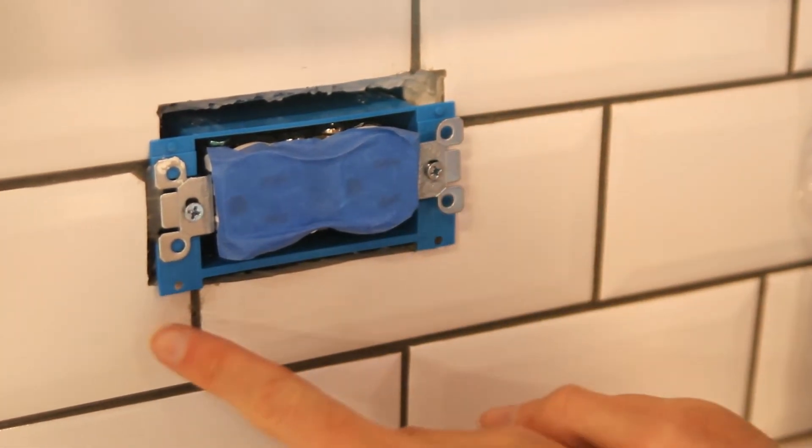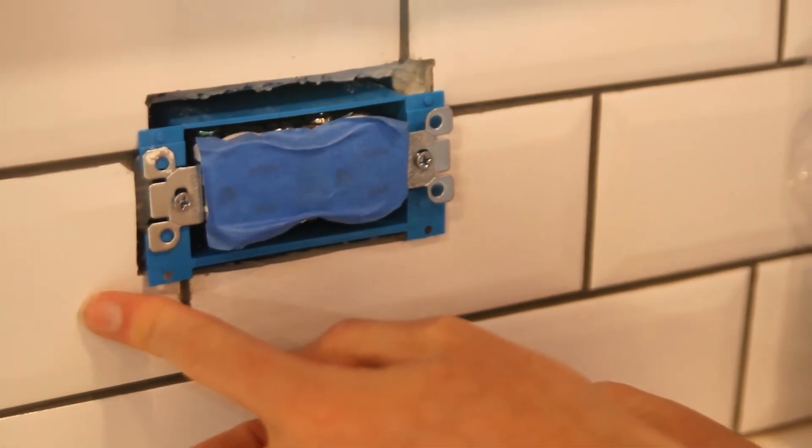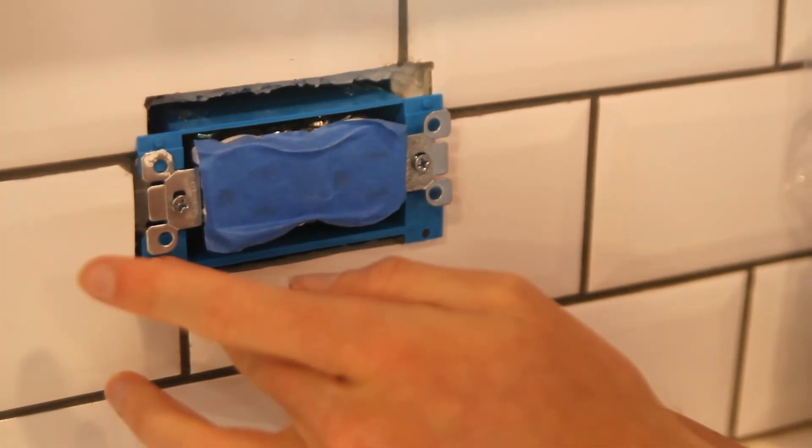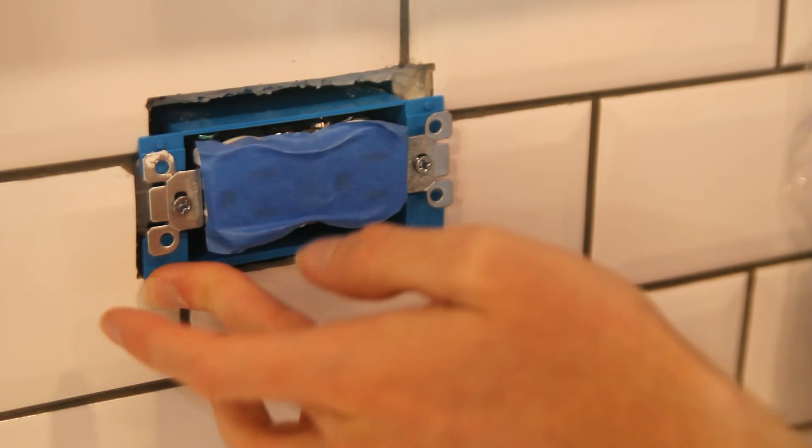And also for one of the other ones I actually didn't have one of the corners supported with a tile, so I just cut out a thin strip of tile to rest on the drywall so that the corner of the extender would have something to rest on.